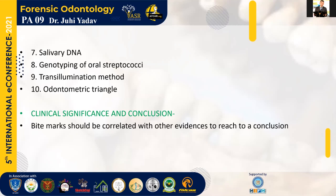Basically, bite marks should be correlated with other evidence to reach a conclusion. They should not be the only thing considered, because in certain cases it has been proven that relying only on bite marks can lead to mistakes. Always correlate with other evidences, reach a conclusion, and only then give your evidence to the court. Thank you so much.